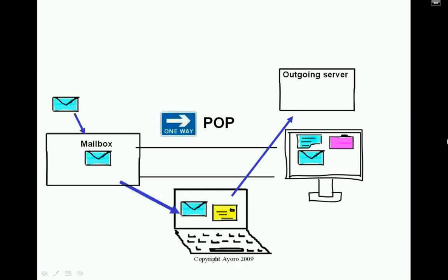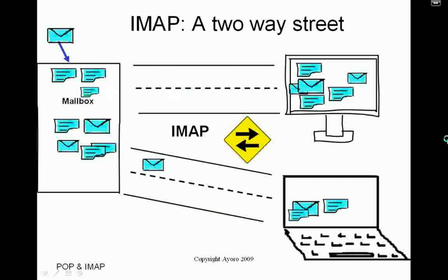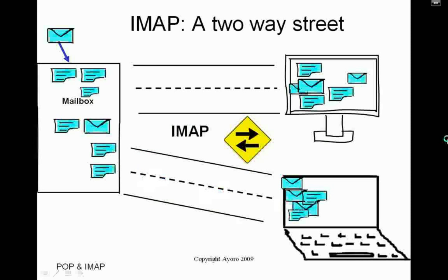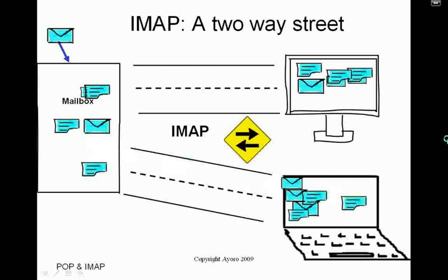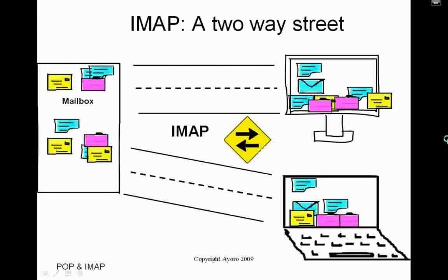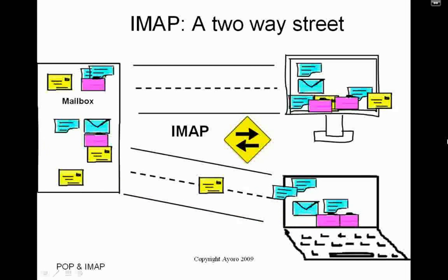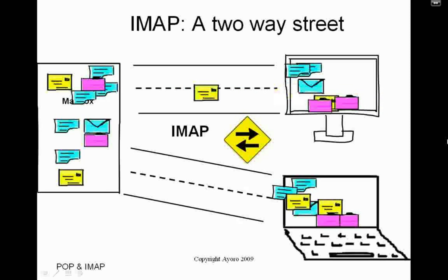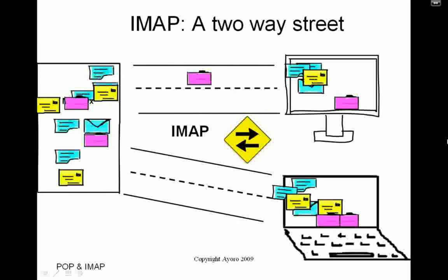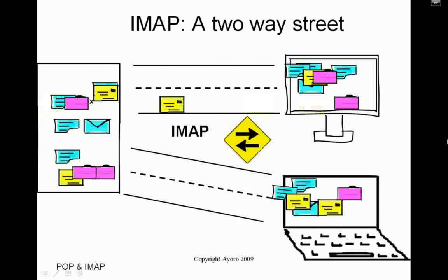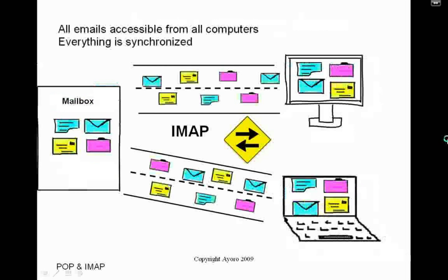IMAP is a much better option if you use multiple computers. IMAP stands for Internet Message Access Protocol, and it's like a two-way street. Messages go from the server to the client and back to the server to be synchronized with other computers. The great thing about IMAP is that even sent mail and mail that's been organized in folders use these two-way streets. So everything you do on one computer is reflected on any other computers — everything is synchronized.